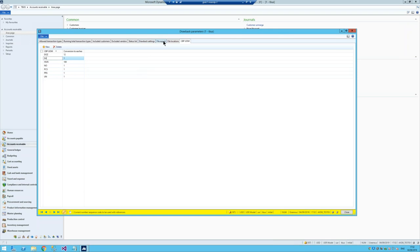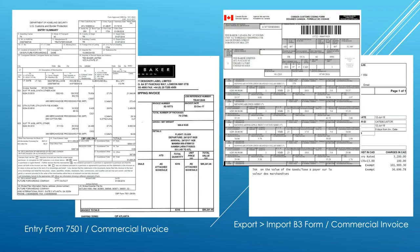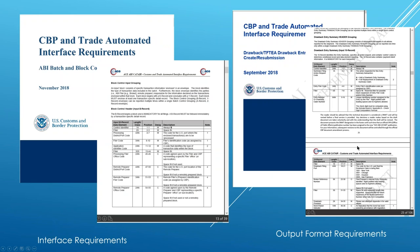The last drawback parameter we're going to look at is the file export tab. This is where most of the work happens. This is where you define the records — record A, record B, record 10, record 31 — which, if you go through the 106-page CBP document, are all the required records. Once you select a record, it defines what goes in each value position. Every record in the CATAIR export has to be 80 characters, so for example, record A: starting position one has a static value of 'A'.